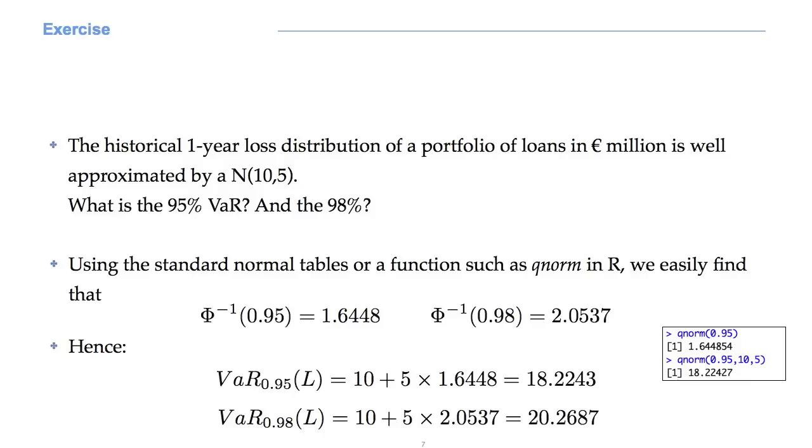If you just type QNORM 0.95, you get the quantile of the standard Gaussian. However, notice that you can also write QNORM 0.95, 10, 5. In this case, the quantile is directly computed from a normal(10, 5). 18.2243 is the value of our 95 percent VAR. We can obtain this directly from QNORM or using the formula in slide 4. For the 98 percent VAR, the reasoning is exactly the same.